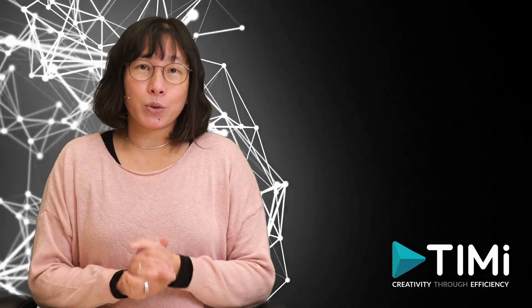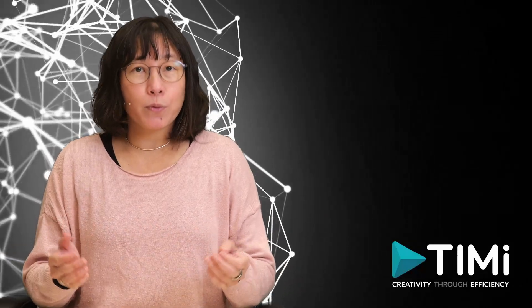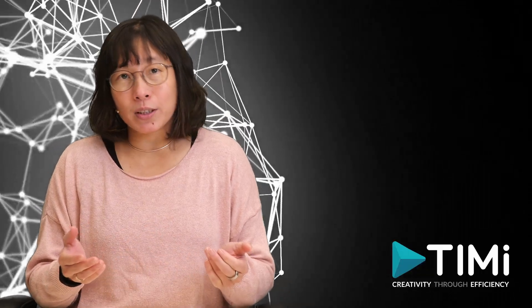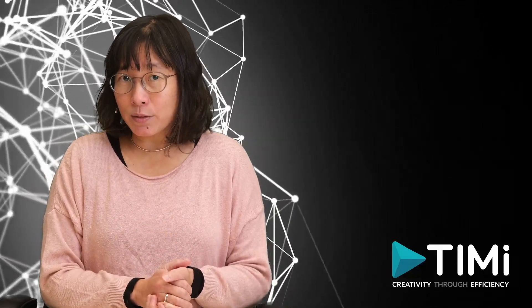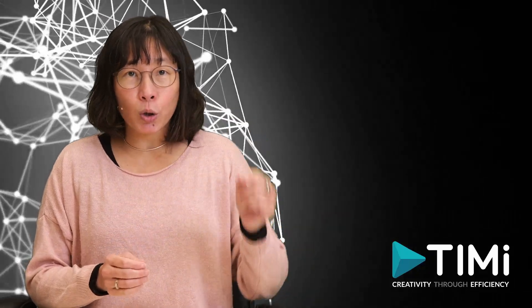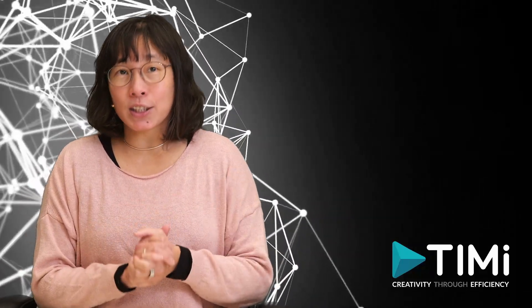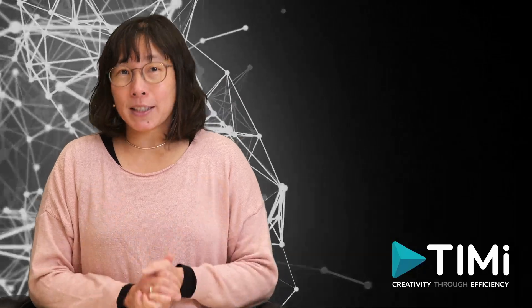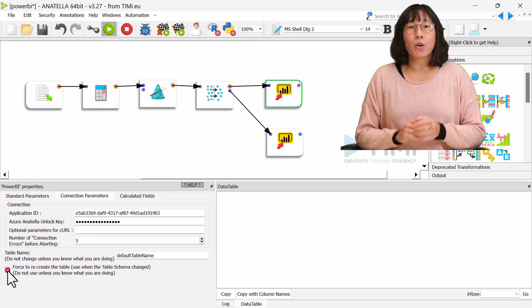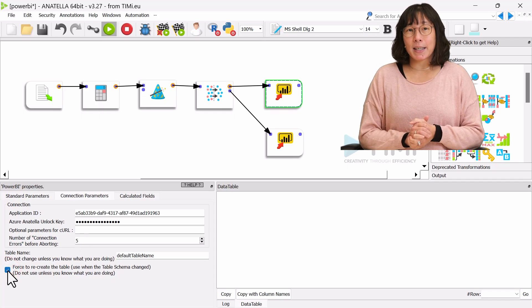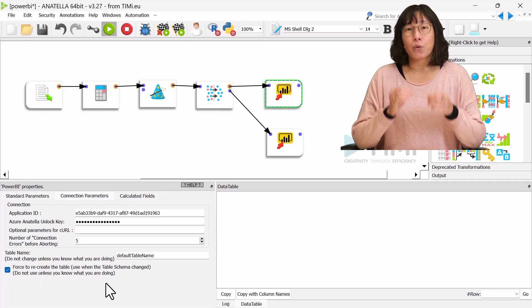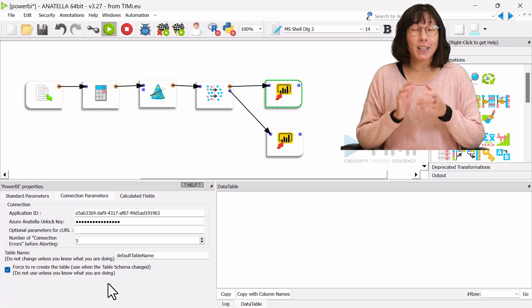So, if you decide to change the dataset schema, for example, modifying settings in the change data type or the Power BI box in Anatella, you need to instruct Anatella to delete the old dataset and create a new one with the updated schema. This is done by checking this checkbox: 'force to recreate the table' in Anatella. This step is crucial for reflecting schema changes in Power BI.